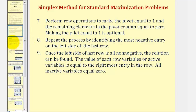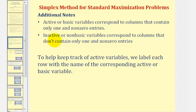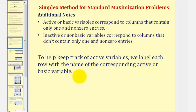Before we do this I want to define active and inactive variables. Active or basic variables correspond to columns that contain only ones and non-zero entries. Inactive or non-basic variables correspond to columns that don't contain only ones and non-zero entries. This is important because when applying the simplex method we can look at the completed tableau to determine the value of the active variables — all of the inactive variables will be equal to zero. To keep track of the active variables we label each row with the name of the corresponding active or basic variable.